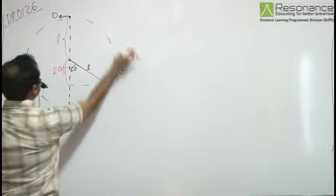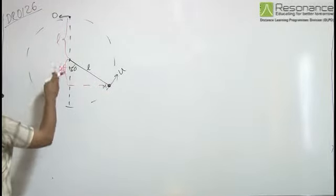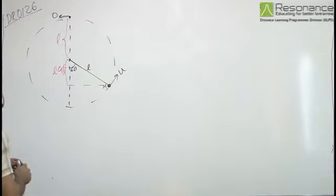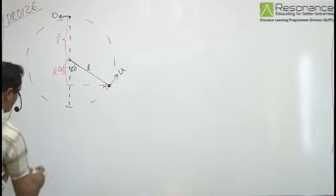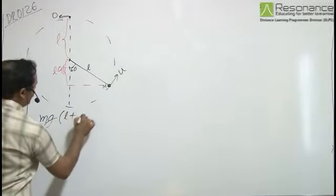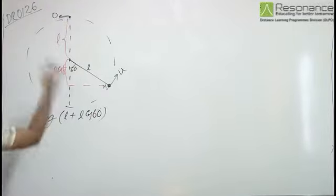The potential energy of the block has to be increased for a height of L plus L cos theta, that is L cos 60. From this, we can write Mg(L + L cos 60) - this much energy has to be increased.